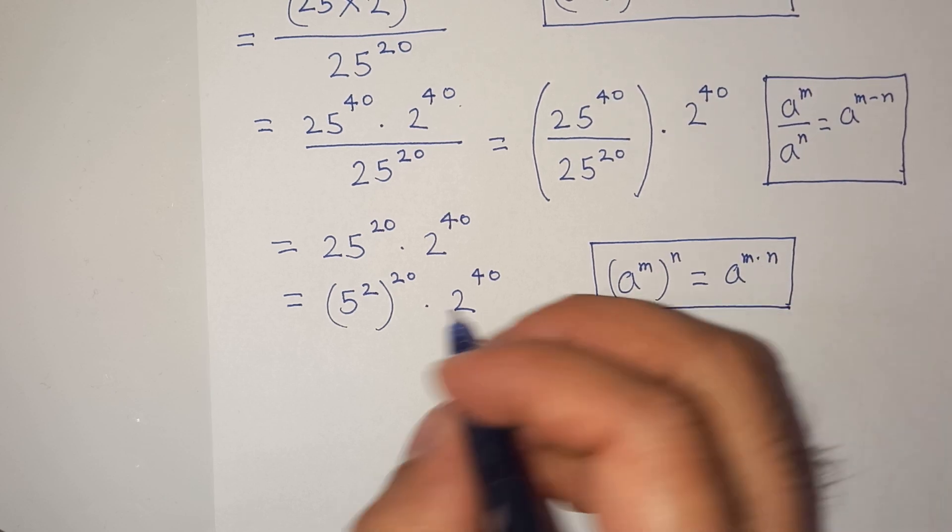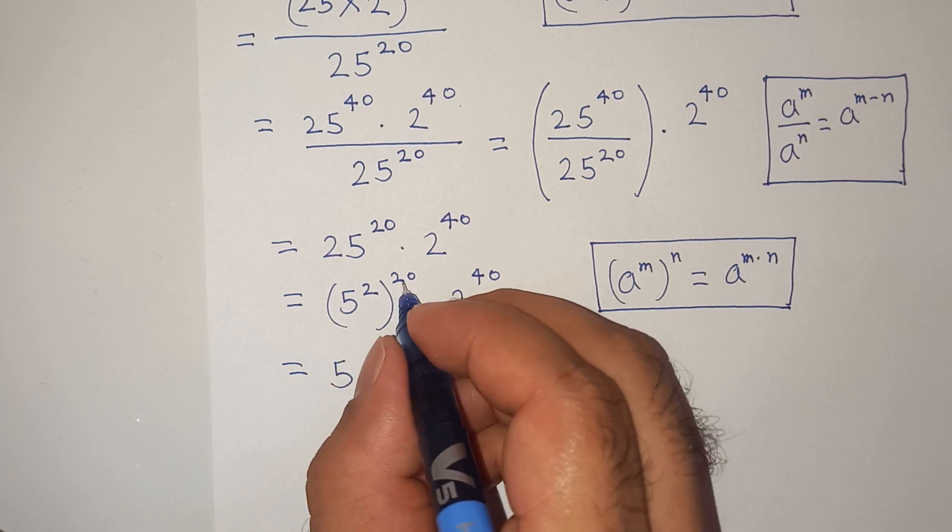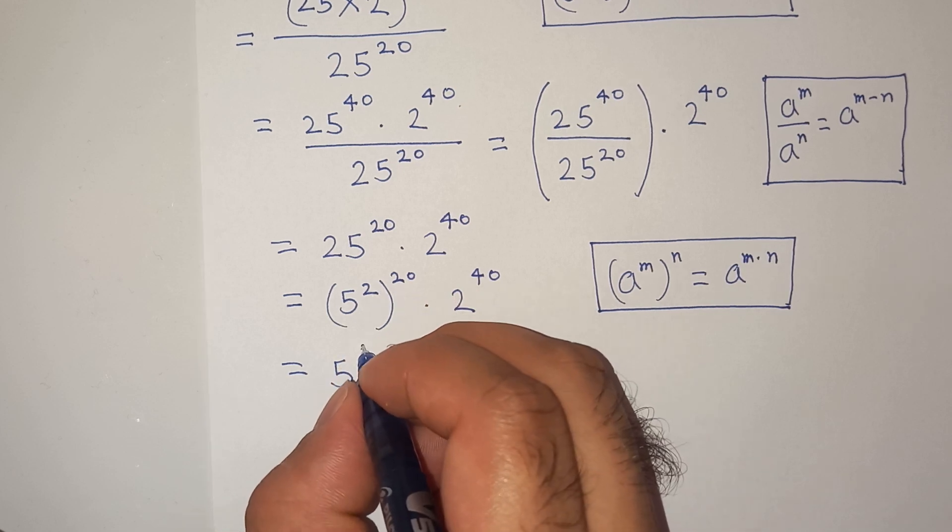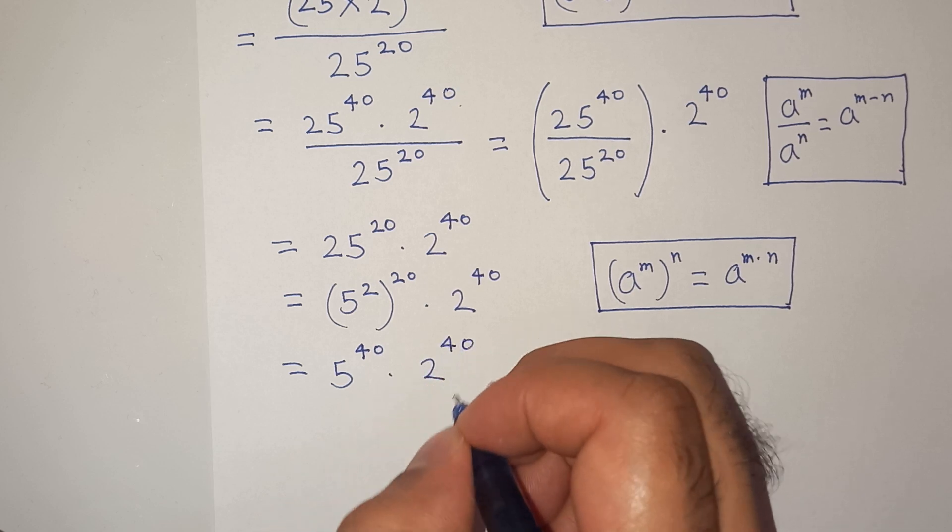So according to this exponential rule we will have 5 power 2 multiplied by 20 which is 40 multiplied by 2 power 40.